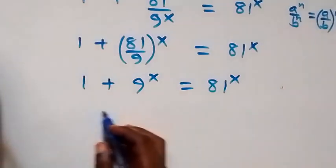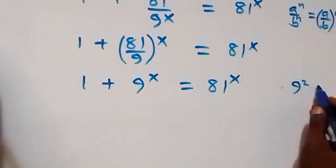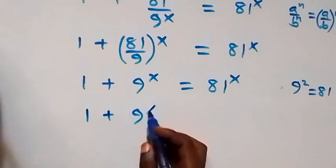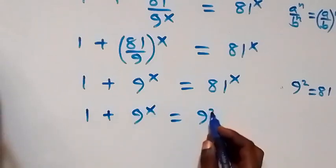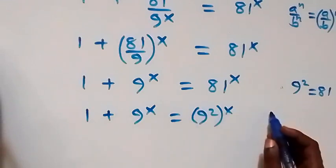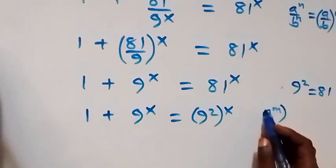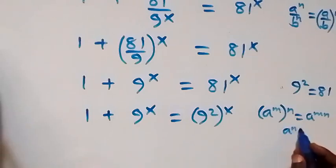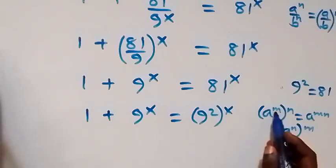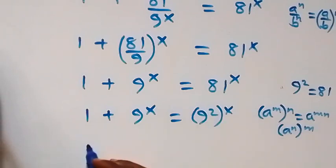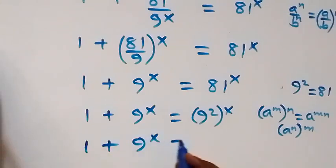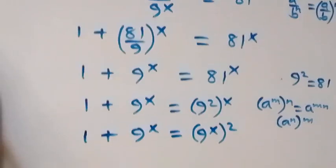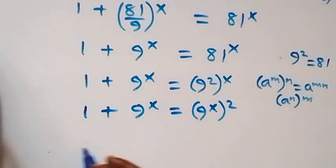We can write 81 as 9 squared, so 81 raised to power x equals 9 squared raised to power x. Following the law of indices, a raised to power m times n equals a raised to power m raised to power n, meaning the powers can be interchanged. So this becomes 1 plus 9 raised to power x equals 9 raised to power x, then raised to power 2.